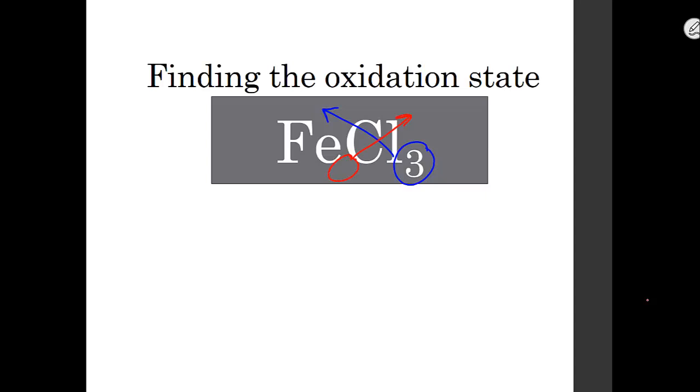However, that method does not work for everyone, so there is another way to determine the oxidation state of the transition metal. And all it requires is some simple algebra.